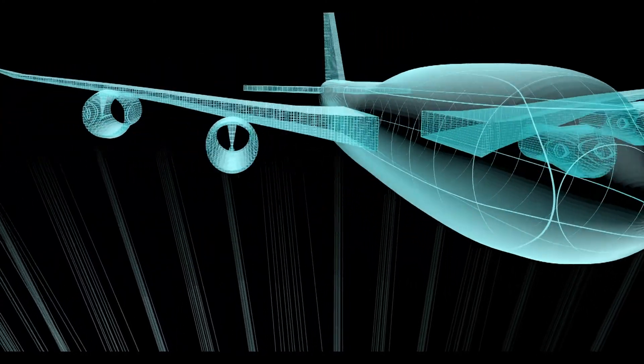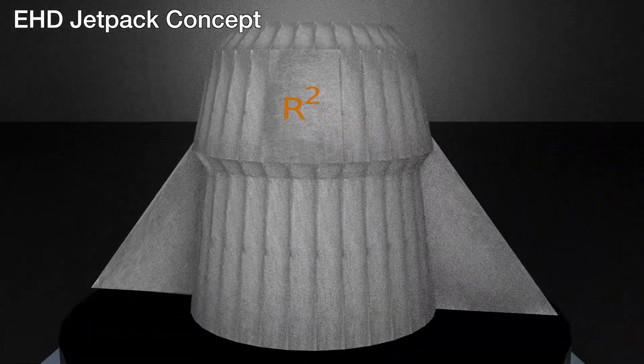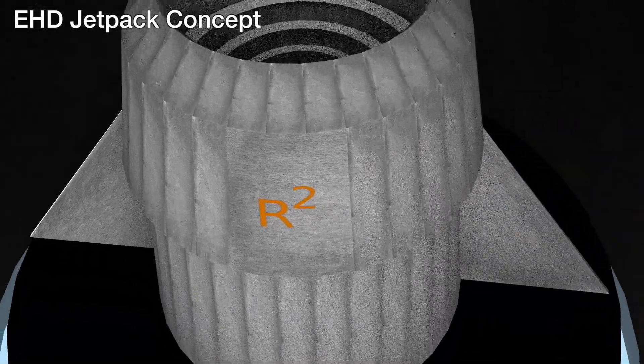EHD thrusters can be up to 50 times more efficient than standard jet engines. EHD thrusters can revolutionize air travel by reducing emissions and overall energy requirements for travel.